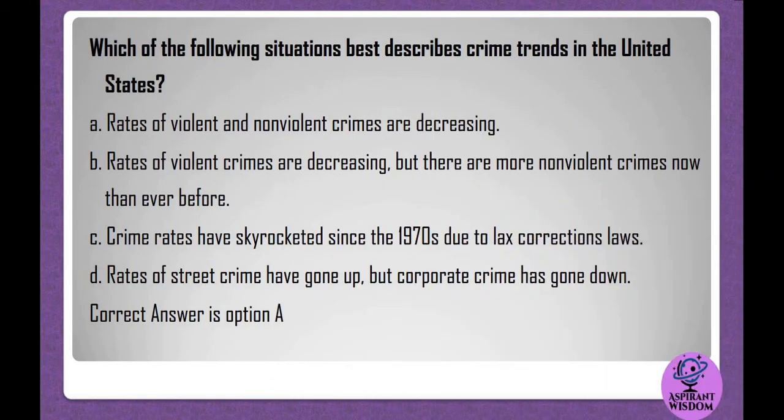Which of the following situations best describes crime trends in the United States? A. Rates of violent and nonviolent crimes are decreasing. B. Rates of violent crimes are decreasing, but there are more nonviolent crimes now than ever before. C. Crime rates have skyrocketed since the 1970s due to lax corrections laws. D. Rates of street crime have gone up, but corporate crime has gone down. Correct answer is option A.